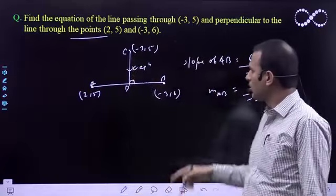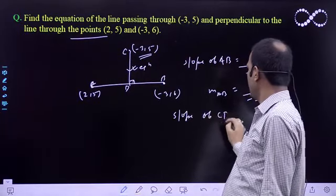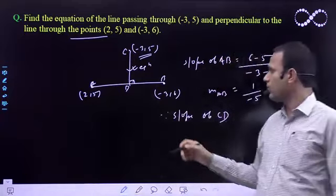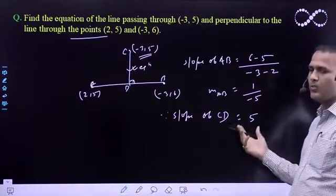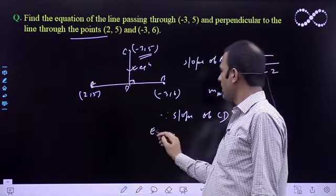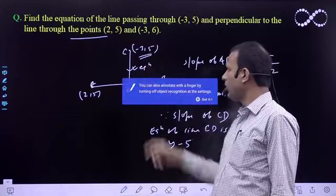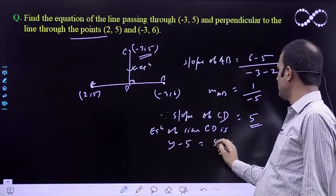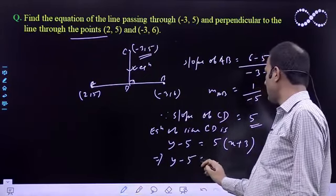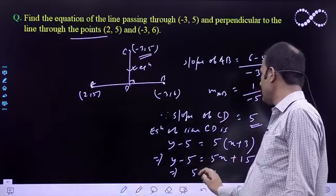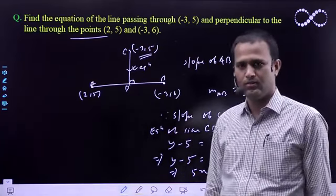CD. What is it? It is y - y1, to here y1 is 5, equal to 5 times (x - (-3)). To here x + 3. So y - 5 = 5x + 15, that means 5x - y + 20 = 0. Here again, required equation of a straight line. Okay, thank you.